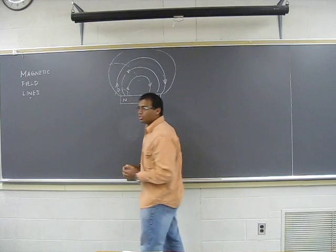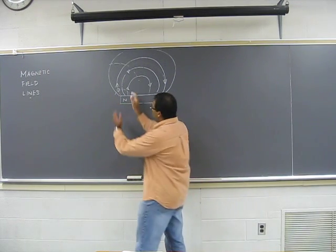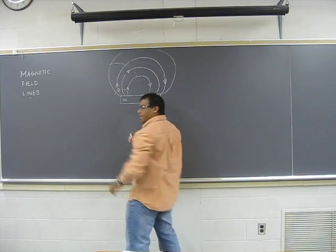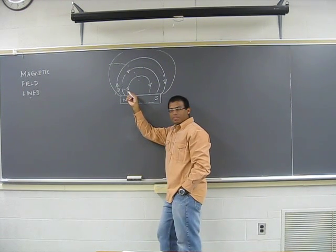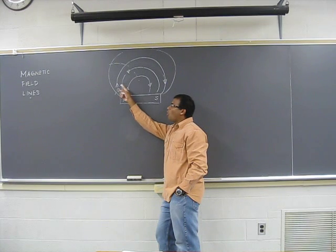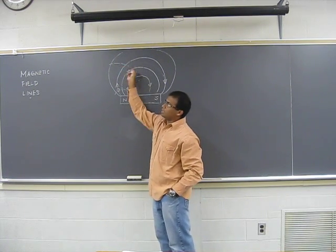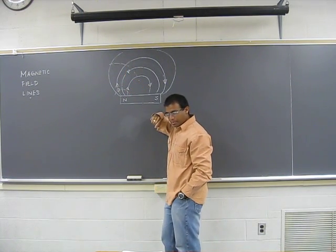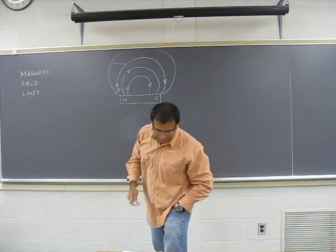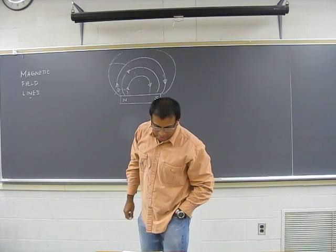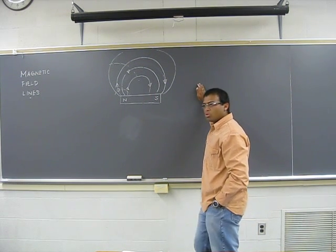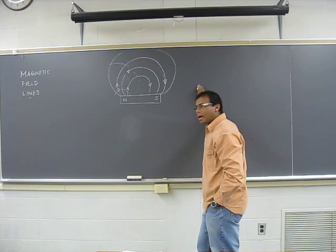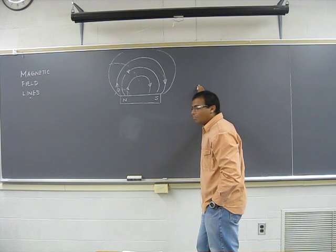The distance or separation is closer here, further away there. So the field, or in other words the strength of the force, is stronger. All these things give us information about what kind of magnetic force is in the proximity, close to the magnet.